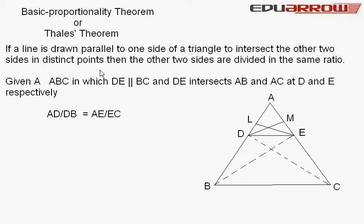Then the other two sides are divided in the same ratio. Given triangle ABC in which DE is parallel to side BC, and DE intersects AB and AC at D and E respectively.